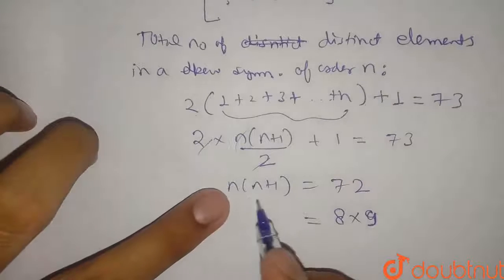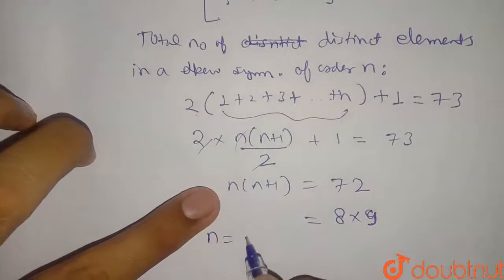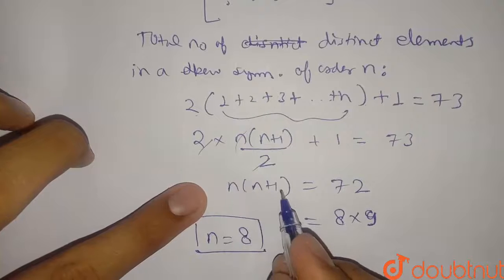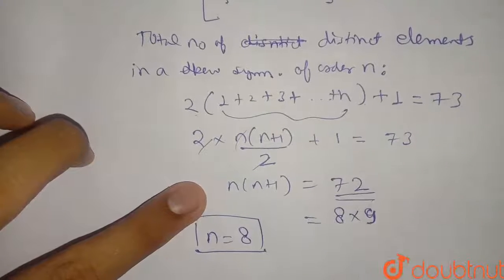So if 8 into 9 then from here what will the value? I can write n is equal to 8. Because if n is equal to 8 then 8 into 8 plus 1 equals 9. 8 into 9 is equal to 72.